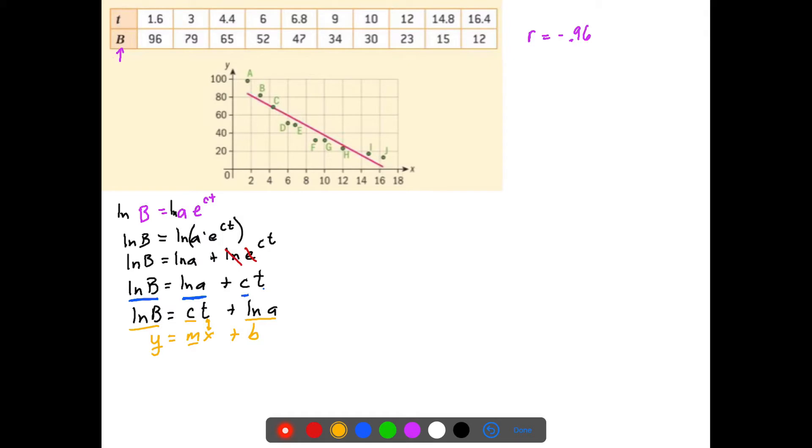So what this means is if I graph for my Y value the natural log of B, and I graph for the X value T, if I get a linear graph, then it means that this function right here, the purple one, B equals AE to the CT power, is actually a correct function for this relationship. So that's what we're going to do. We're going to create a table that has the natural log of B for the Y values, and then going to keep T for the X values there.